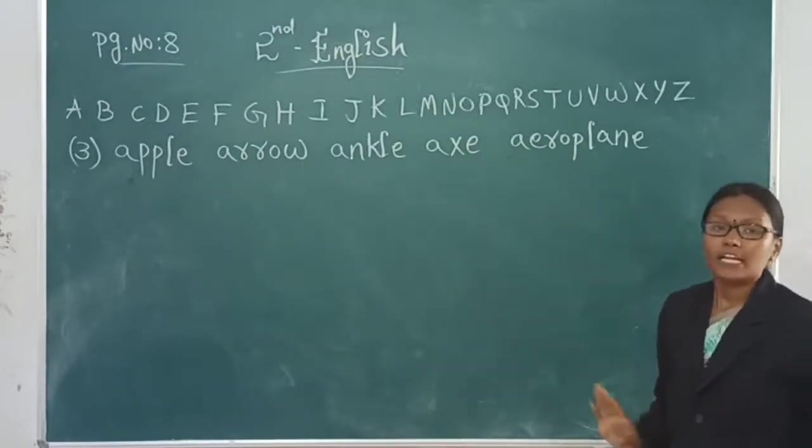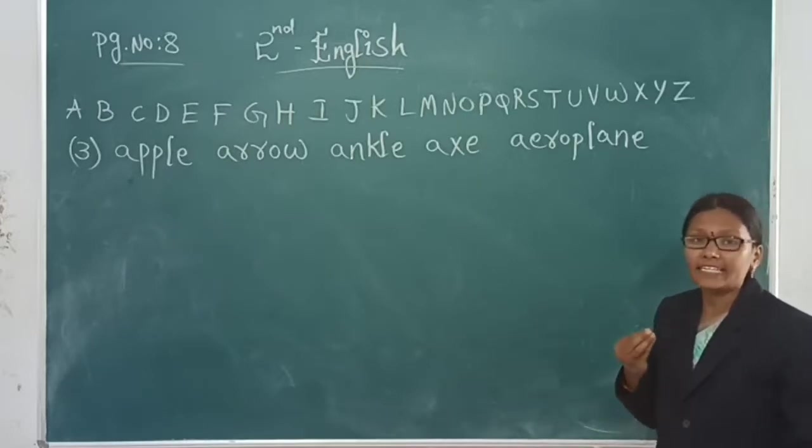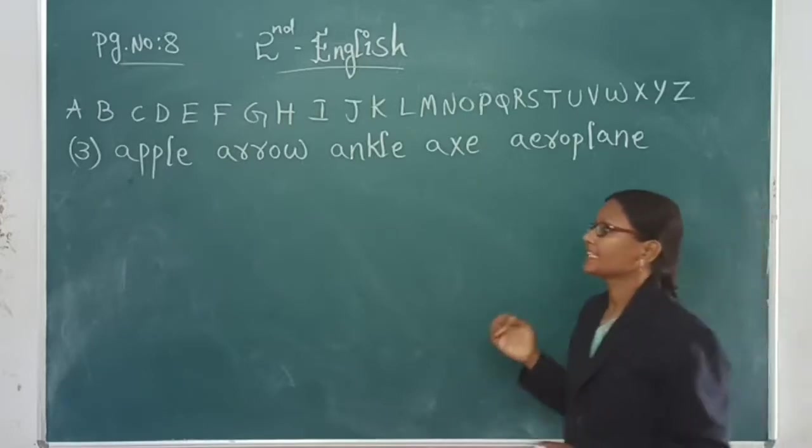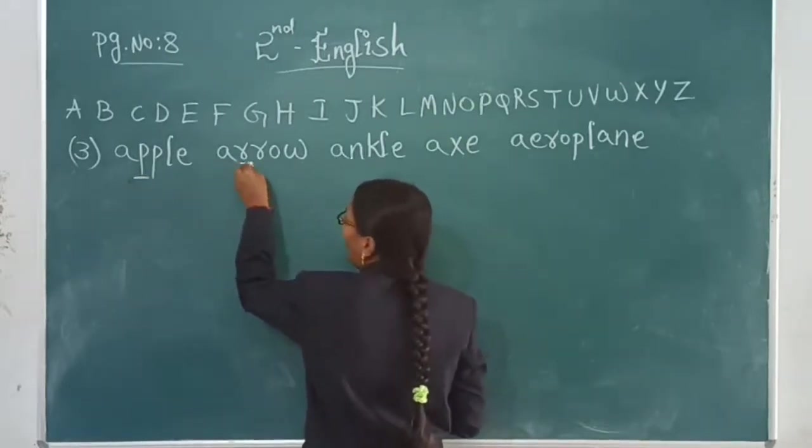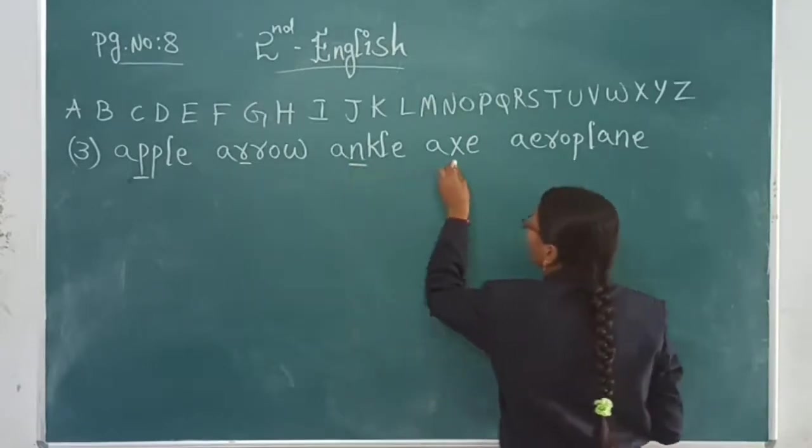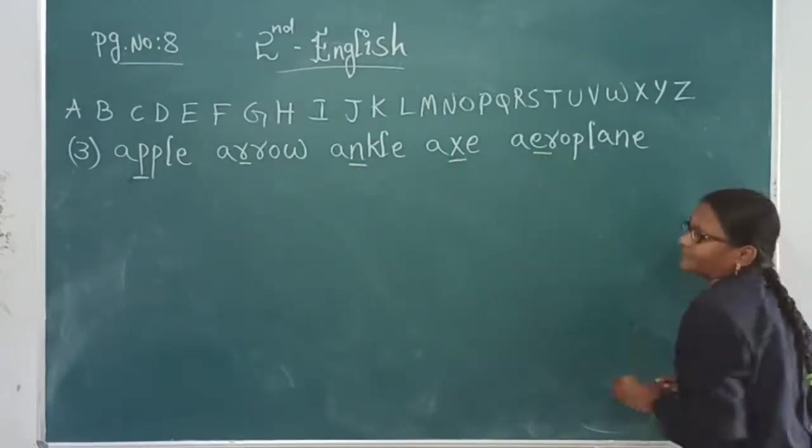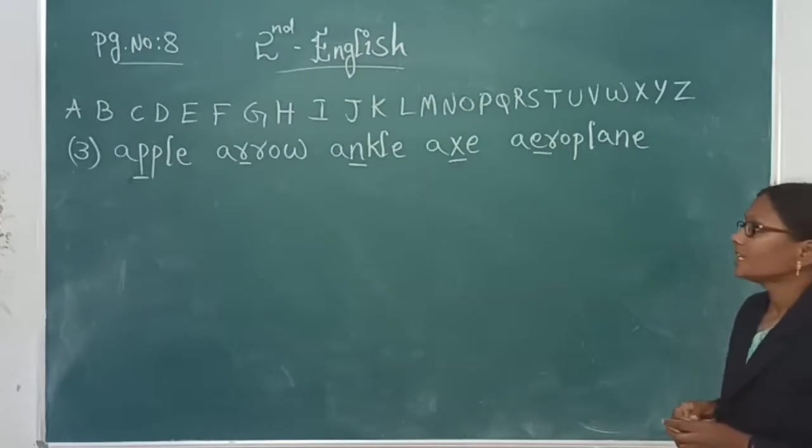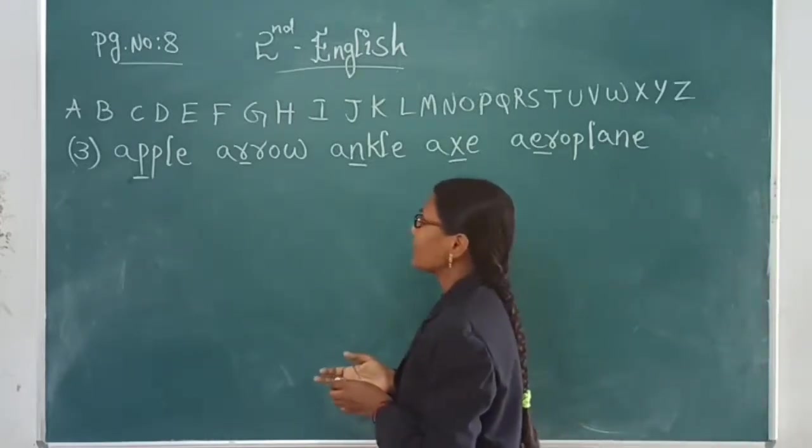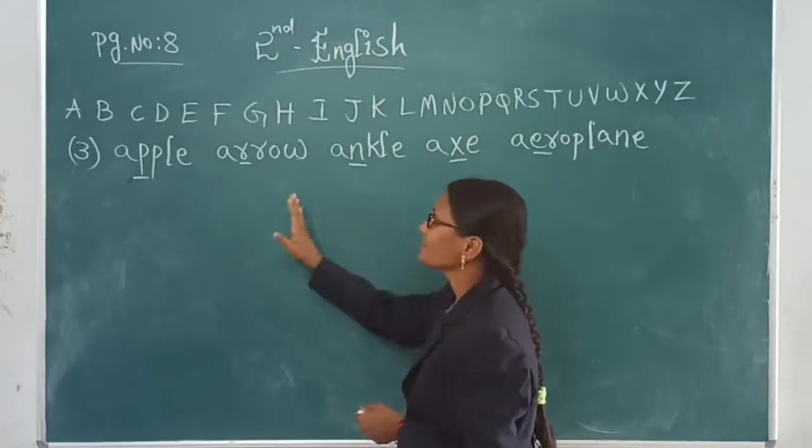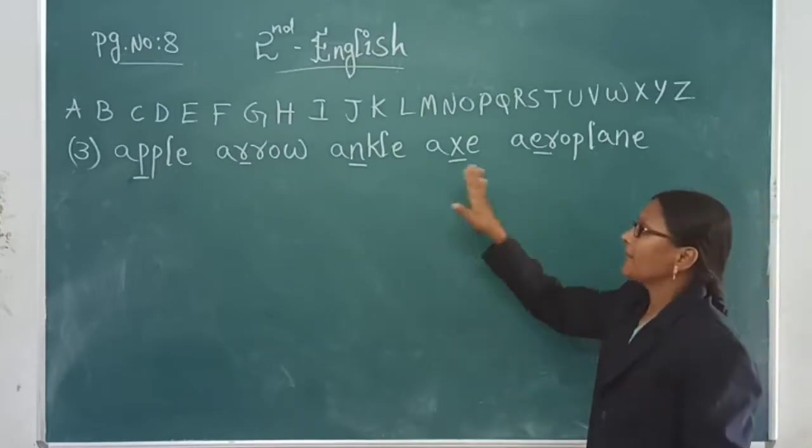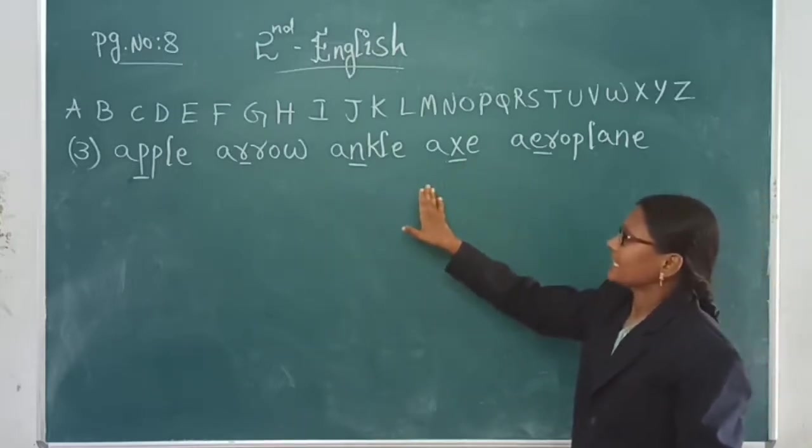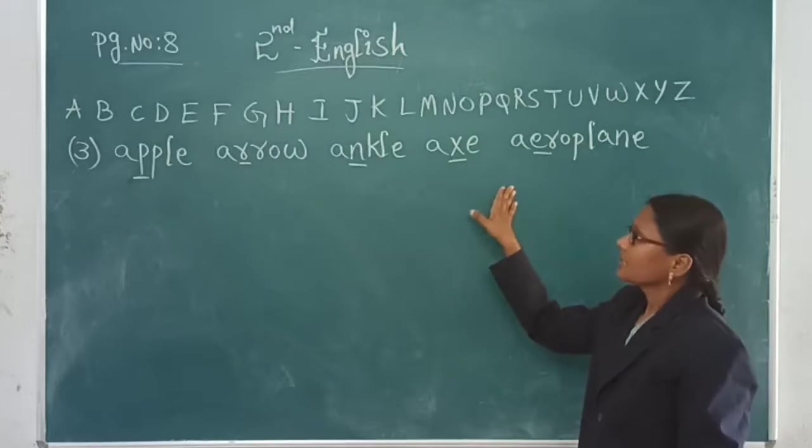Now we have to see the second letter. What is the second letter? Here, second letter is P, R, N, axe E. Now we have to arrange. Arrange first one. A, B, C, D, E.